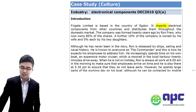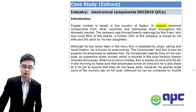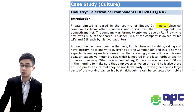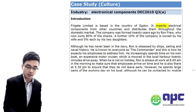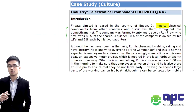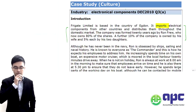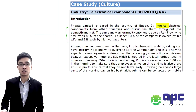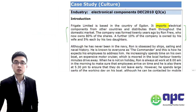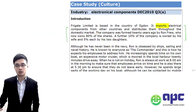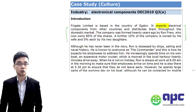The company was formed 20 years ago by Ron, who now owns 80% of shares. A further 10% is owned by his wife and 5% by his two daughters. This is clearly a family-based company structure. Normally, family-based company shareholders dislike risk, because they not only want to make money but also want the company to last forever.